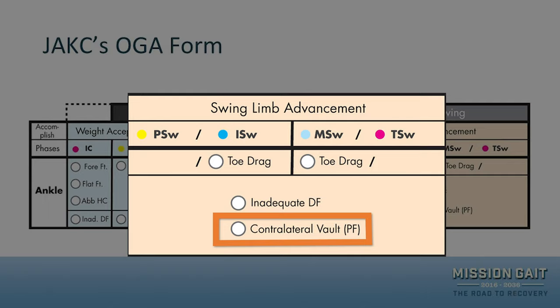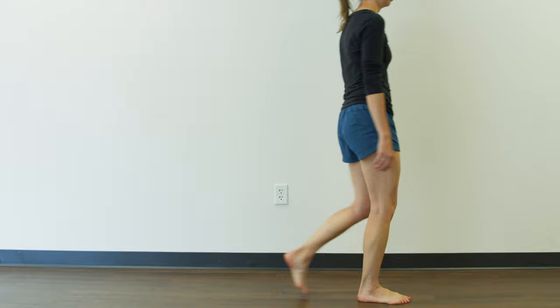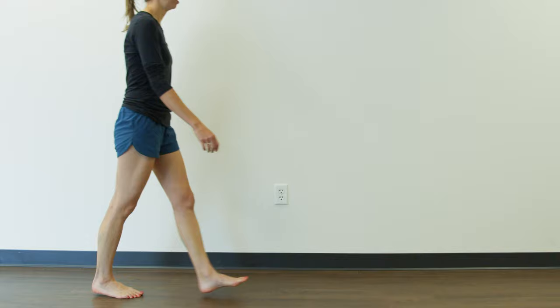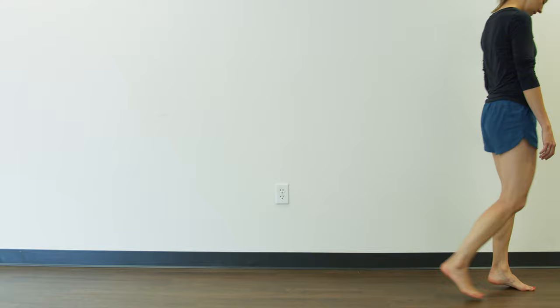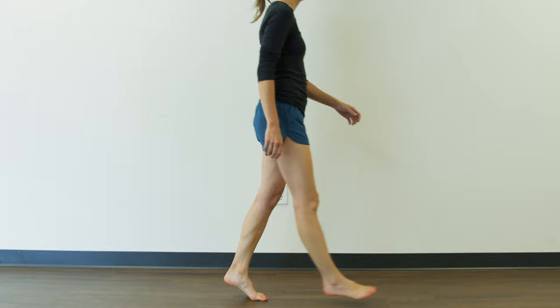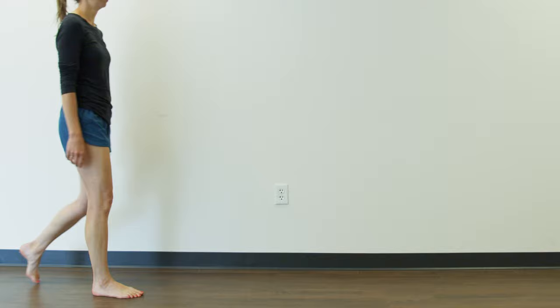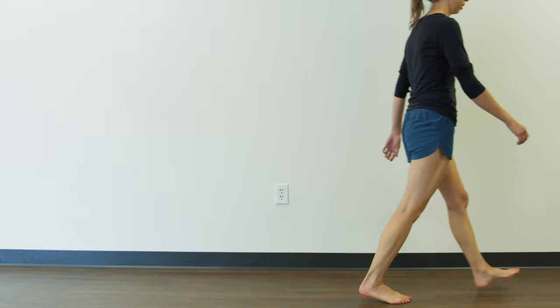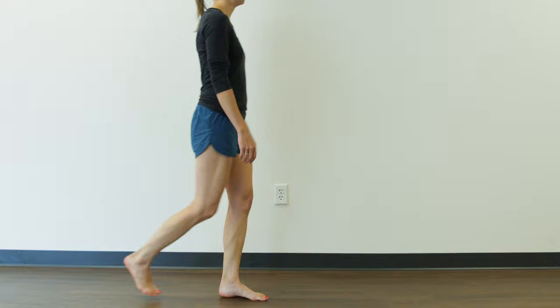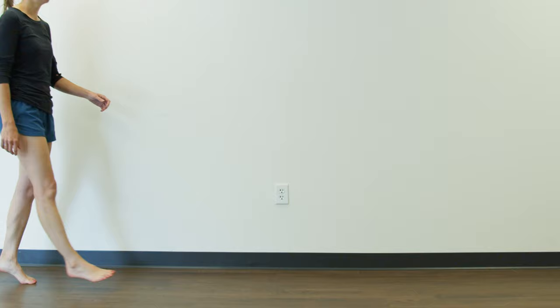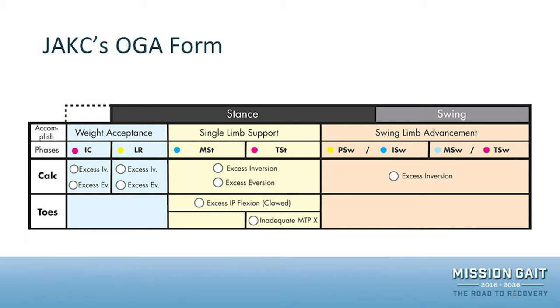Contralateral vault is where the opposite side — not the limb being observed — goes into plantar flexion, rising up on the toes, raising the whole body up. This allows the reference limb to clear the ground. For example, if a patient has inadequate dorsiflexion and isn't clearing well, they may perform a contralateral vault on the other side to compensate. So you see the decreased dorsiflexion on one side manifested as the contralateral vault on the other.